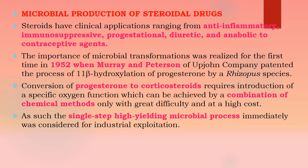Then we move on to microbial transformation, which has a variety of applications. Initially in 1952, this microbial transformation was carried out by two scientists: Moray and Peterson. Both had a patent using Rhizopus species, and they produced corticosteroids, importantly combining with chemical methods. They achieved very large amounts — varieties of yield have been enhanced by single-step microbial processing.